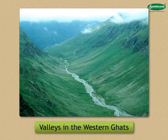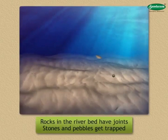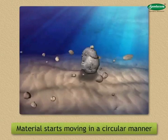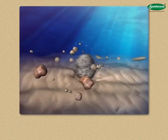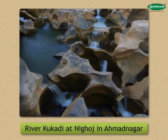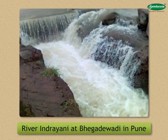Third, Potholes. At times, the rocks in the river bed have joints. Stones and pebbles get trapped in such joints. Due to the stream of water, the trapped material starts moving in a circular manner. This leads to the formation of a depression at such a place. Such depressions are called potholes. For example, in the bed of river Kukadi at Nigoj in Ahmednagar district and in the bed of river Indrayani at Bhegadewadi in Pune district, such potholes are formed on a large scale.